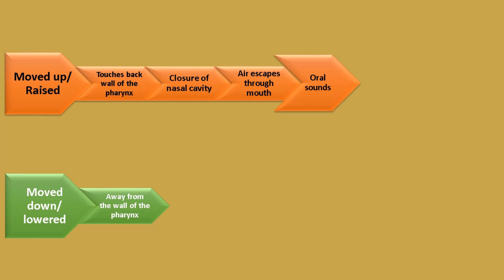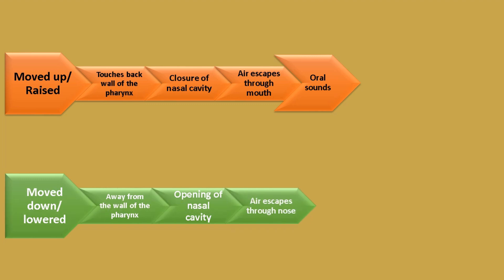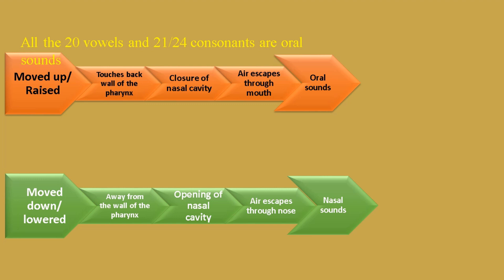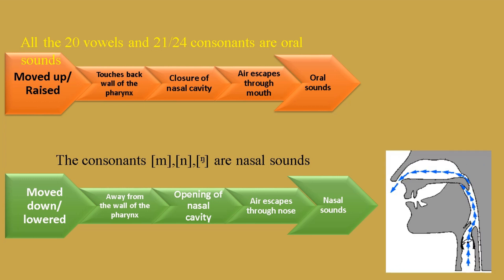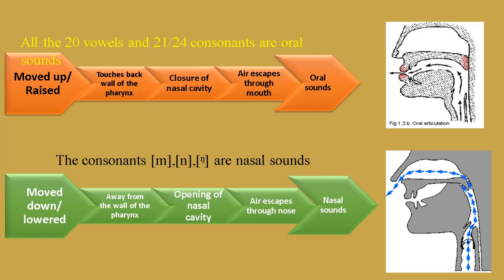When the velum is moved down or lowered, it moves away from the wall of the pharynx. There is an opening of the nasal cavity and the air can only escape through the nasal cavity, so there is an articulation of nasal sound. All the 20 vowels and 21 out of 24 consonants are oral sounds. There are only 3 nasal sounds, mainly MA, NA, and ING.